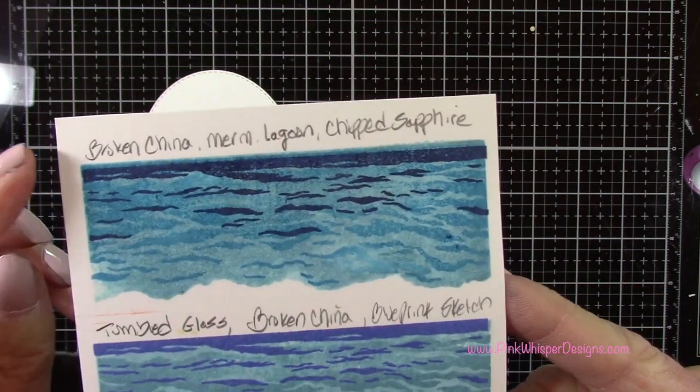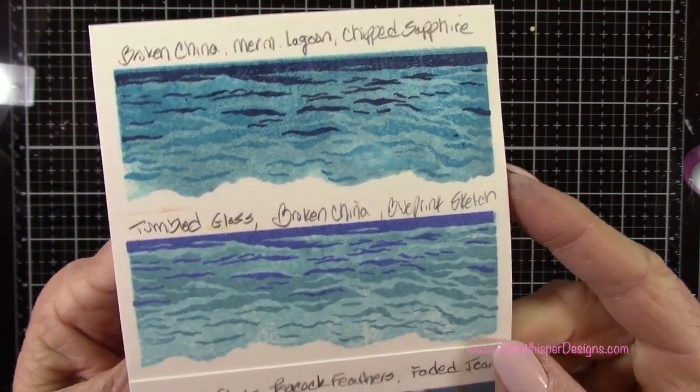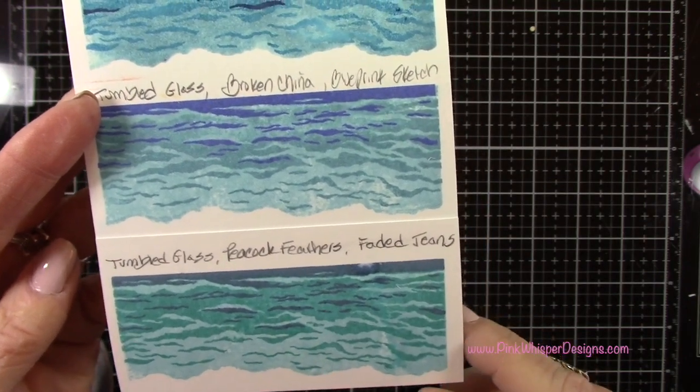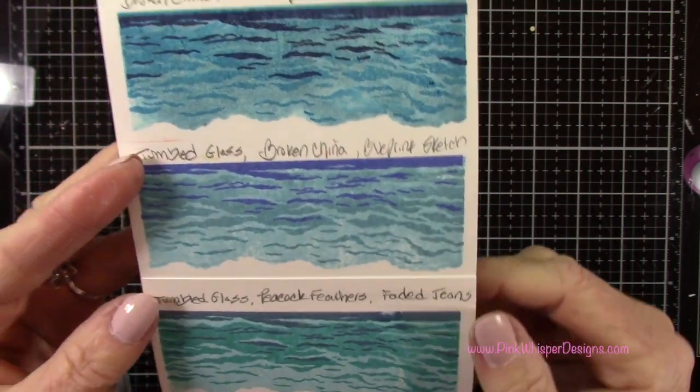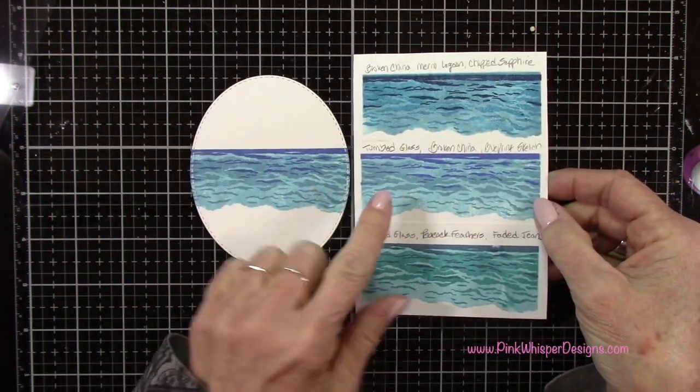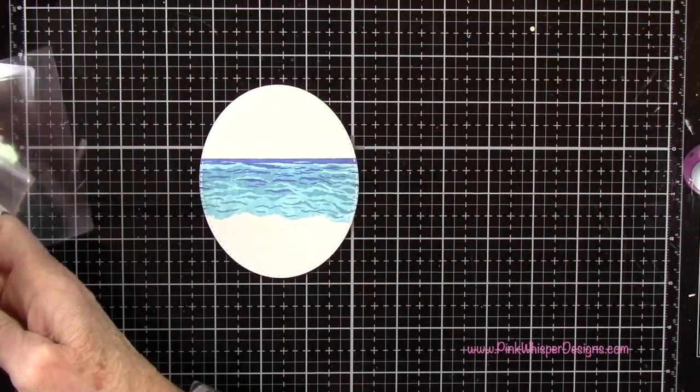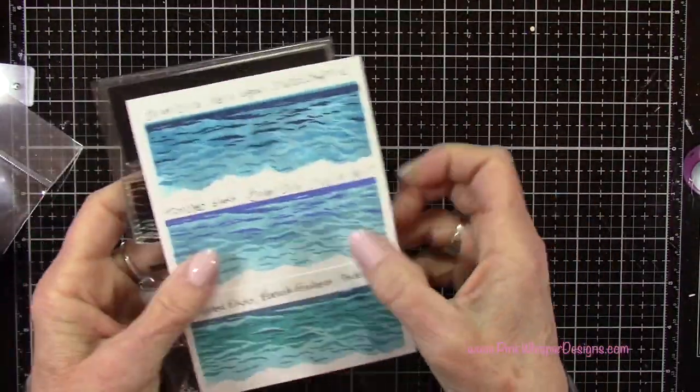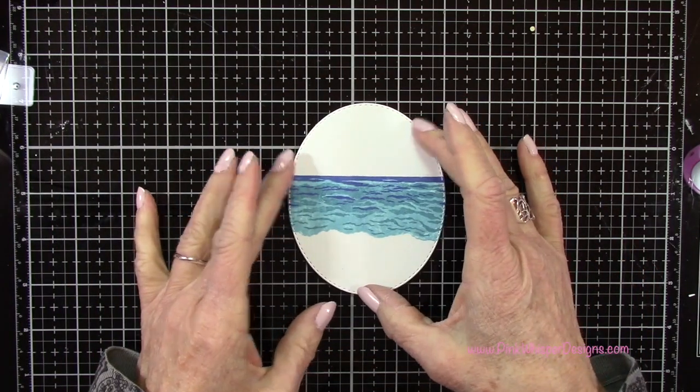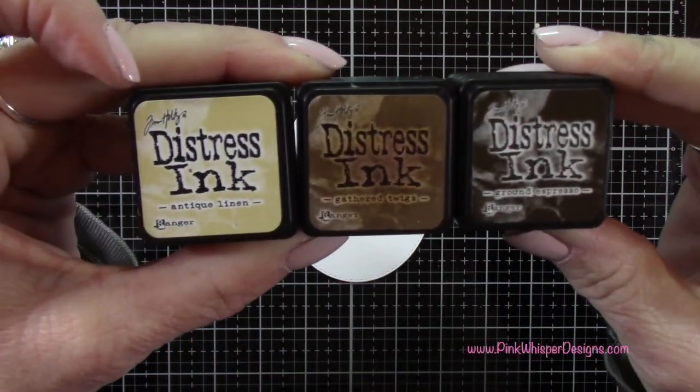The one at the top is Broken China, Mermaid Lagoon, and Chipped Sapphire. The one at the bottom is Tumbled Glass, Peacock Feathers, and Faded Jeans. To be honest, I really liked all three of these and I'm sure there's many more combinations you could do. But I did decide on that middle one there. I'm going to keep this with the stamp so that I don't have to redo this if I ever want to make another card. I don't have to rethink it.